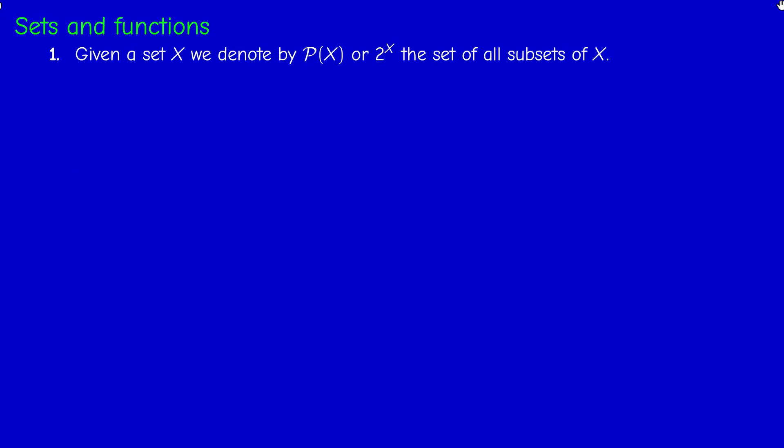First, if you have a set X, calligraphic P of X or 2 to the power X usually denotes the set of all subsets of X. It's called the power set of X. Why do we use this notation 2 to the X? Because if X has N elements, then the power set of X has 2 to the power N elements.